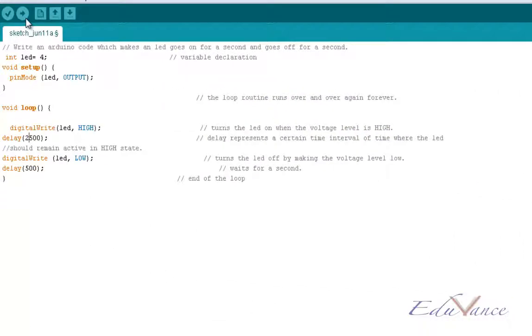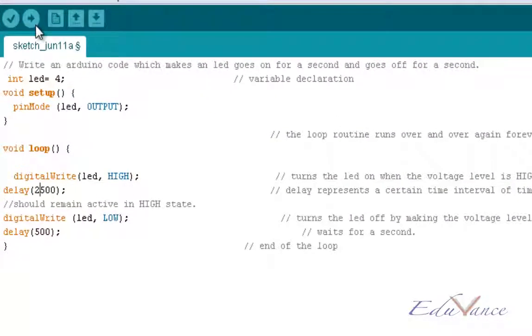So, you can make some changes to the delay function and see what we do. Let's change the on time to 500 and the off time to 2500. And let's see what happens. Let's go ahead and upload again.